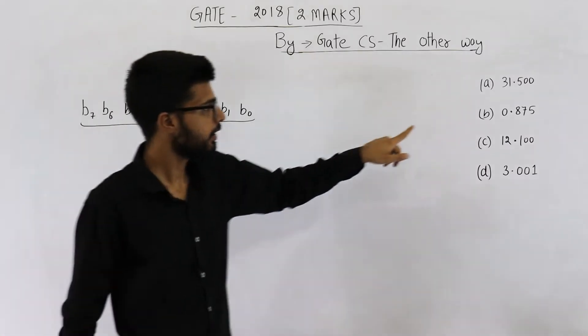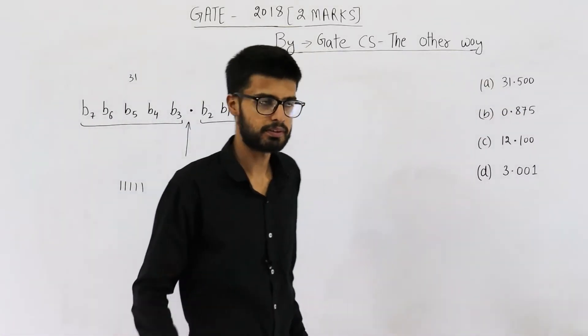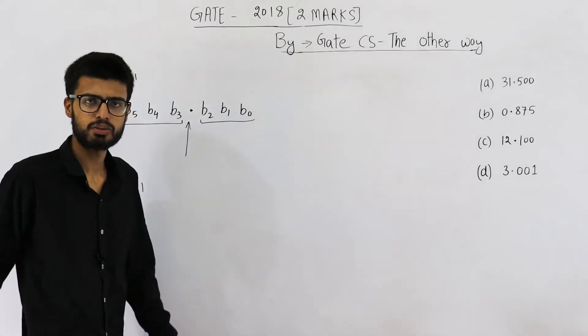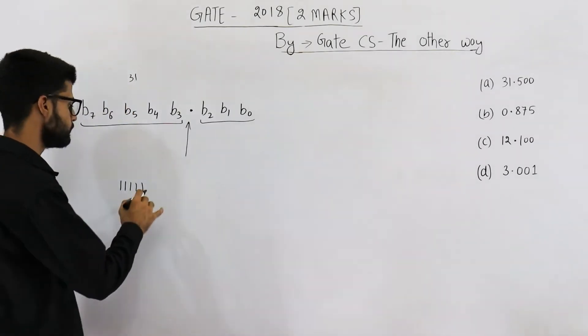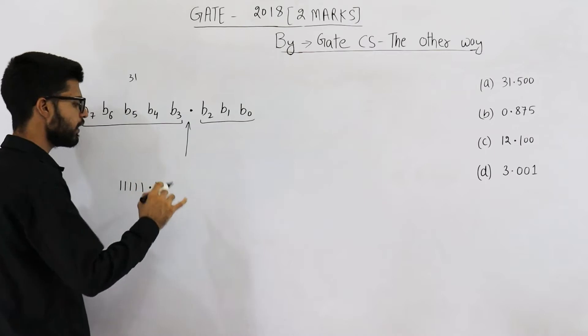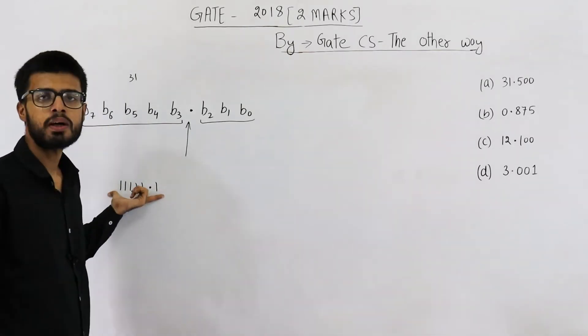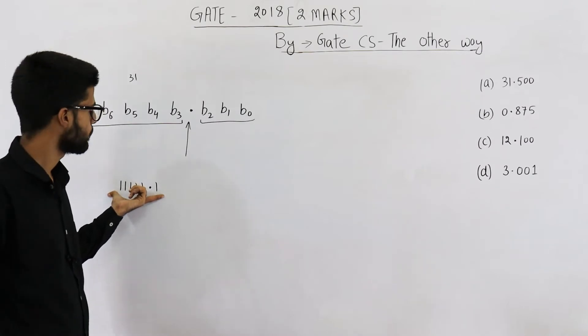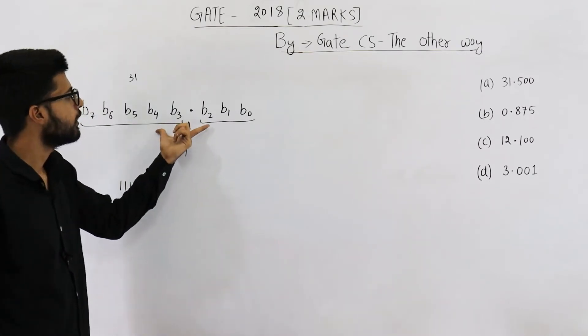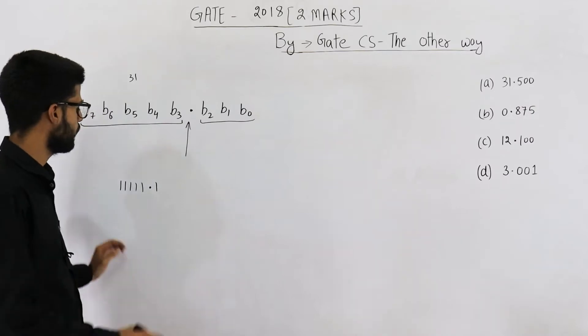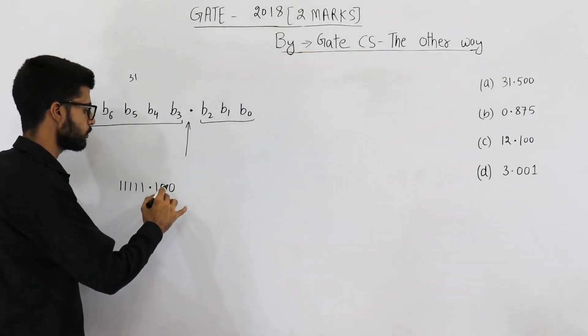Now let us see if 0.5 can be represented in 3 bits. Yeah, we can actually represent 0.5 in 3 bits, rather 0.5 needs only 1 bit. So this is how you write 31.5. How to save this number in this representation? Just add two zeros.